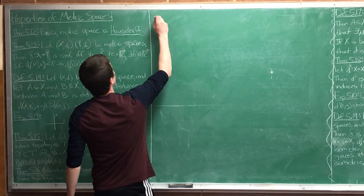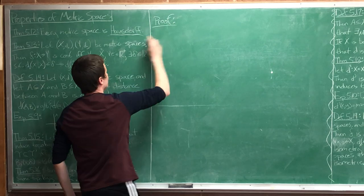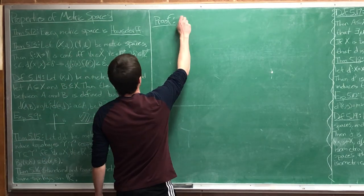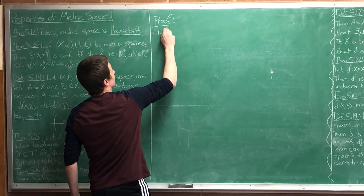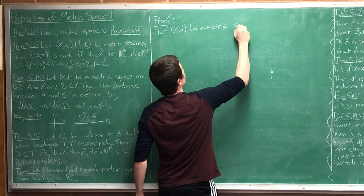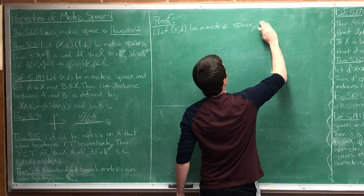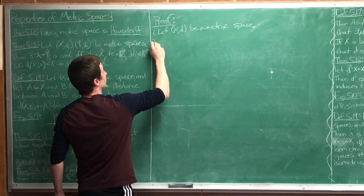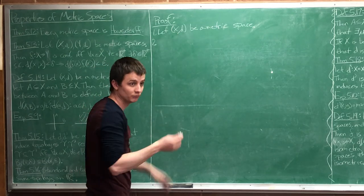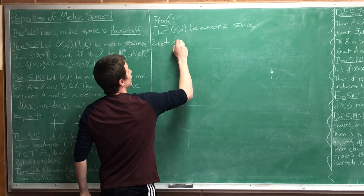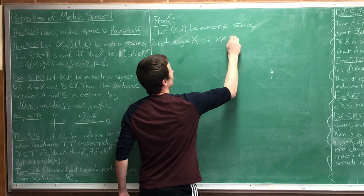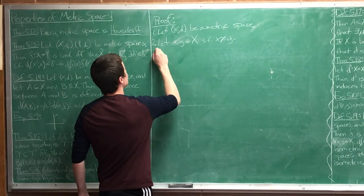So we're proving every metric space is Hausdorff. Let X be a metric space. Let little x and y be points in big X such that x is not equal to y - they need to be separate points. I'm going to let epsilon equal the distance between x and y. I'm going to create an open ball around x and an open ball around y, each with radius epsilon halves, and show that a point being in both those sets leads to a contradiction.